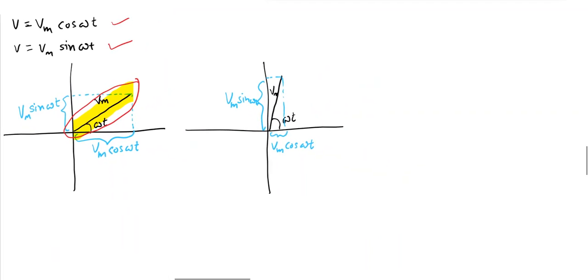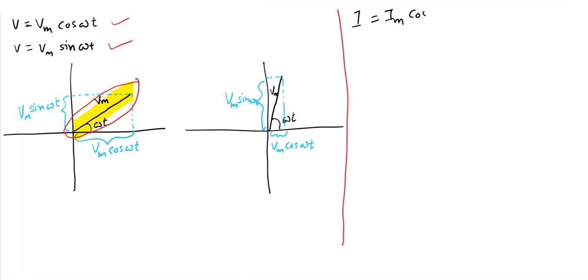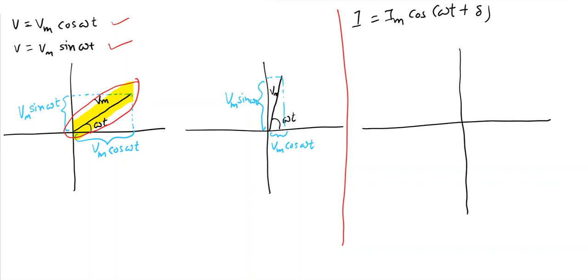Suppose instead of Vm, I consider current. Suppose in some circuit I have a current given by i = Im cos(ωt + δ). I know it is a scalar quantity, but I want to present it on a graph. What I can do is take the phasor of the current. What do we mean by the phasor of current?